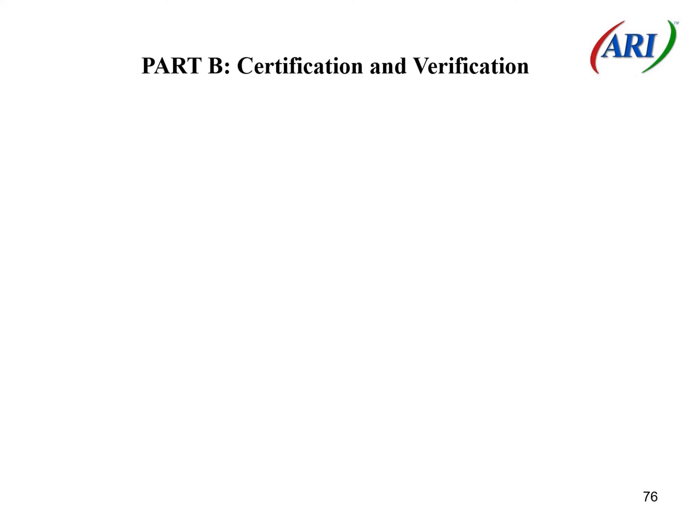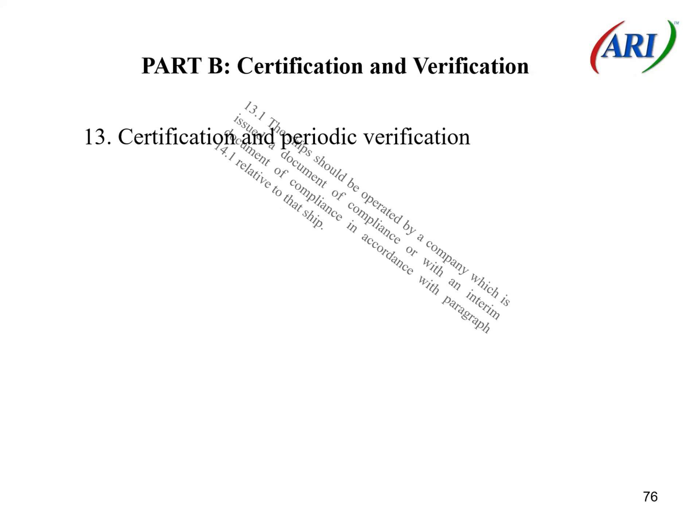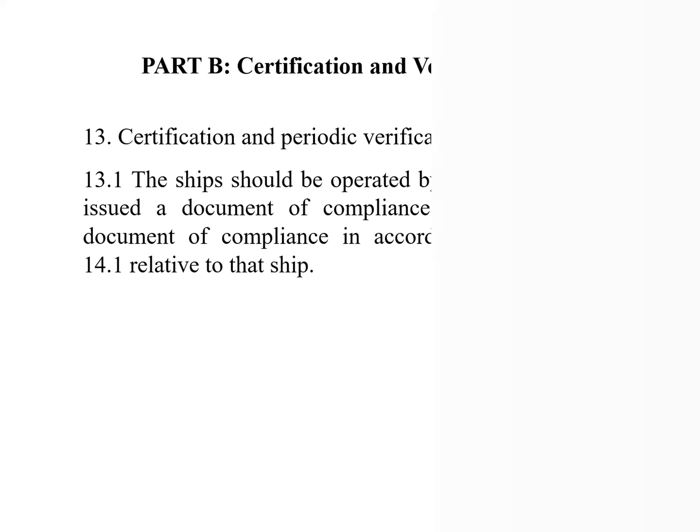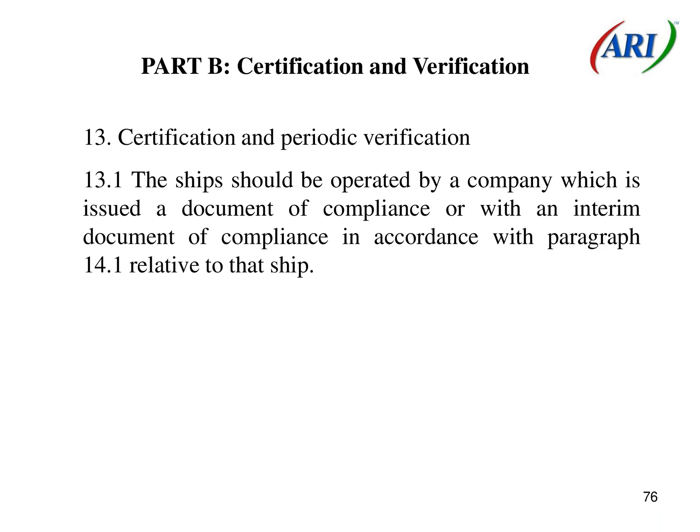Part B: Certification and Verification. Section 13: Certification and Periodic Verification. 13.1 The ship should be operated by a company which is issued a document of compliance, or with an interim document of compliance in accordance with paragraph 14.1, relative to that ship. 13.2 A document of compliance should be issued by the administration, or at the request of the administration by another contracting government, to any company complying with the requirements of this code for a period not exceeding five years.